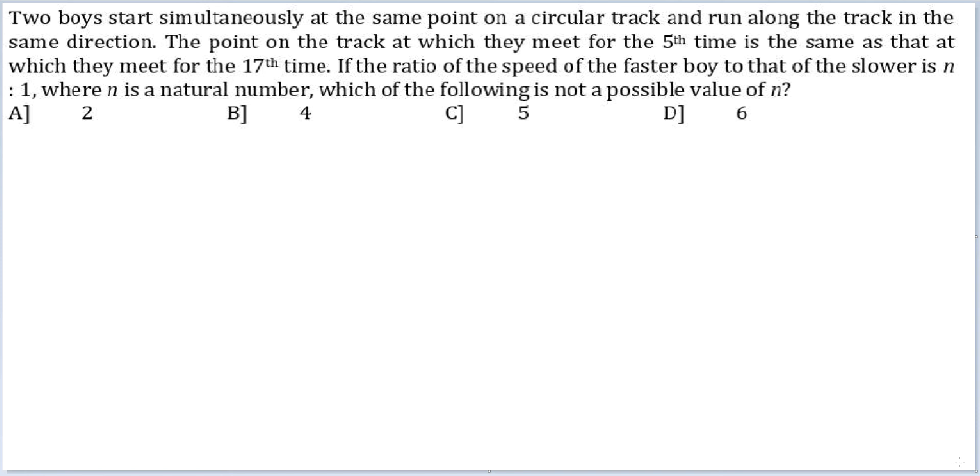The point on the track at which they meet for the 5th time is the same as that at which they meet for the 17th time. If the ratio of the speed of the faster boy to that of the slower boy is n:1, where n is a natural number, which of the following is not a possible value of n?